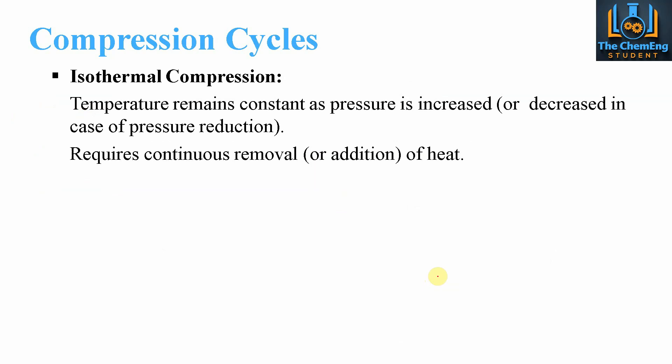Now another couple of types of compression that we need to discuss here when we talk about compression cycles. Now the first one is the isothermal compression system. And this means that the temperature will remain constant as the pressure is either increased or decreased. And this would therefore require for isothermal compression the continuous removal or addition of heat depending on the system. And it's given by this expression here. Now for those of you that have done our heat transfer course, our thermodynamics and fluid mechanics courses, you will be familiar with these relationships. This one is whereby we fix the temperature so we can relate the pressure in the volume at point 1 with the pressure in the volume at point 2.